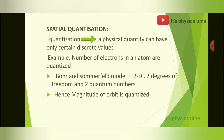There are two features of the vector atom model: spatial quantization and the spinning of the electron. Spatial quantization — what is quantization? It is the physical quantity that can have only certain discrete values. For example, the number of electrons in an atom are quantized because it is composed of a certain number of individual electrons.